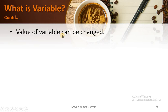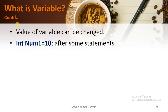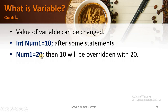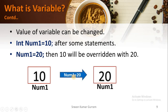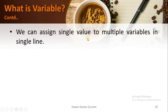The value of a variable can be changed. If you want to modify a variable value, we can do that. For example, if we write 'int number1 = 10' and then after some statements write 'number1 = 20', the value will be updated to 20. The existing value 10 will be overridden with the new value 20. When we write 'int number1 = 10', a cell is allocated and value 10 is stored. After some statements, when we write 'number1 = 20', within the same cell the value is updated to 20 and the existing value 10 is deleted.